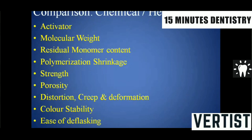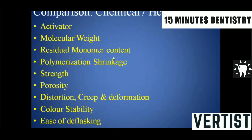Continuing the comparison: strength — whether transverse, compressive, or impact — is always superior in heat-activated resin. Porosity is less in chemically activated and more in heat-activated resin. Distortion, creep, and deformation are greater in chemical cure. Color stability is inferior in chemical cure. Ease of deflasking is better with chemical cure and worse with heat cure. Biocompatibility is excellent with heat-activated resin and inferior with chemically activated resin due to unreacted monomer content.